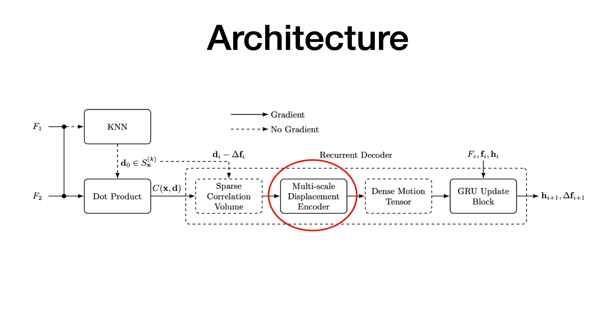To process SCV, we propose a multi-scale displacement encoder which can effectively capture large and small motions and encodes the 4D sparse correlation volume into a 2D dense motion tensor. A GRU is used to iteratively predict residual flows. The sequences of residual flows are summed to form the final optical flow prediction.